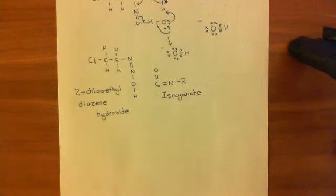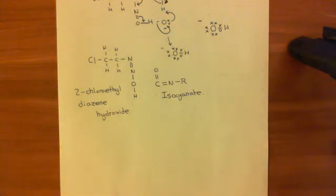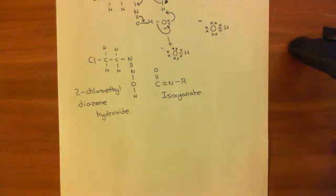We create two products from our nitrosourea drug: the 2-chloroethyl-diazine-hydroxide and the isocyanate. These are both going to now attack cells, and I want to stress that they don't just attack cancer cells — they attack all sorts of cells. Whatever cell they go into, they are horrendously cytotoxic.